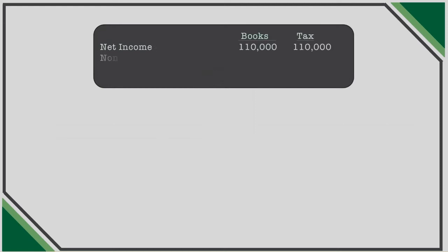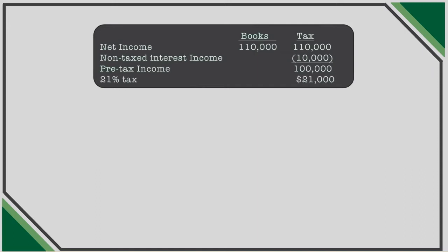Let's assume a company receives $10,000 in municipal bond interest for the year, and book income inclusive of this interest for the company is $110,000. When preparing the annual tax return, the company would reverse the $10,000 and only record taxable income of $100,000. This income will never ever be subject to tax. As such, book tax expense should not include taxes on this income.